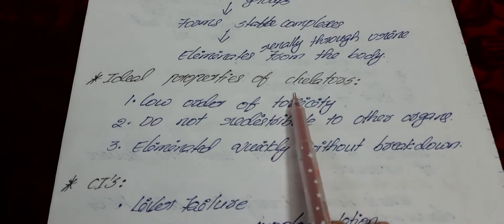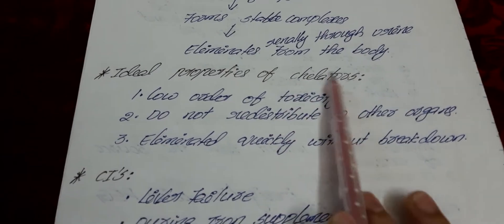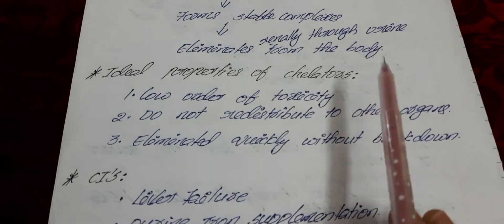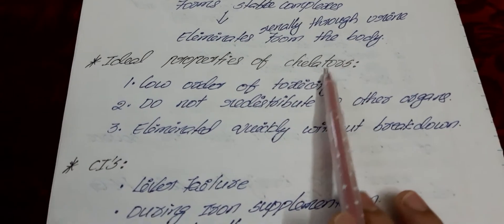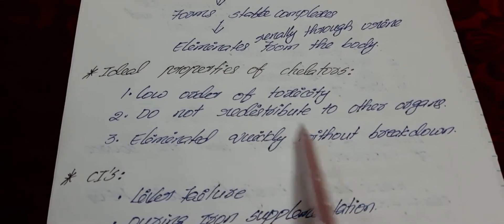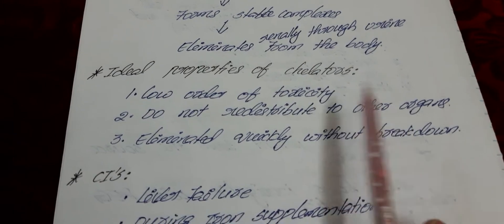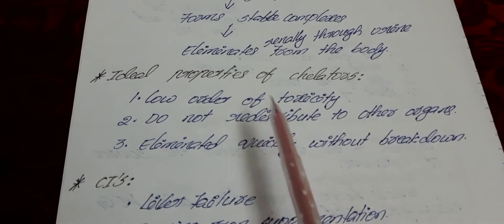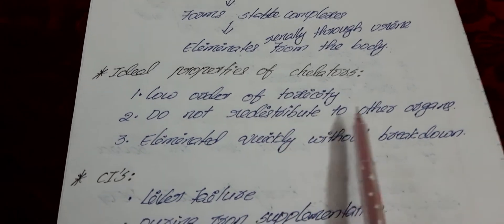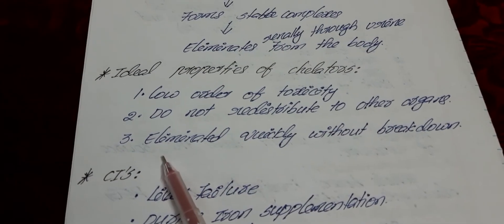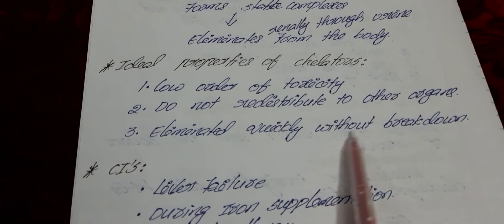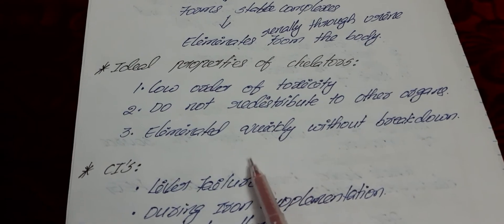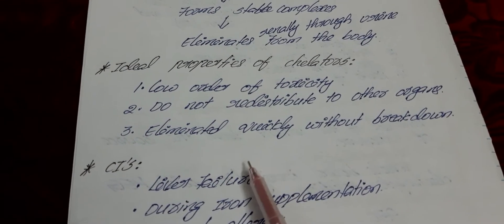The ideal properties of chelating agents are: they have a low order of toxicity; they do not redistribute to other organs — they only act on the heavy metals and eliminate them from the body; and they are eliminated quickly without breakdown, passing out through the urine.